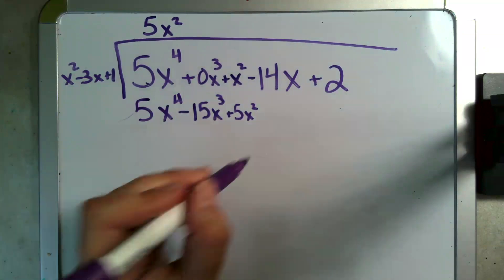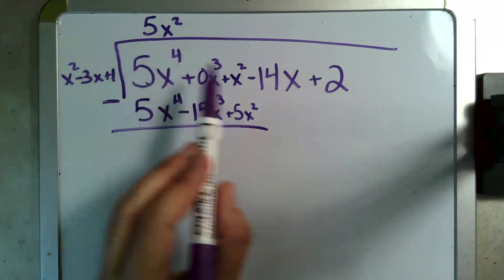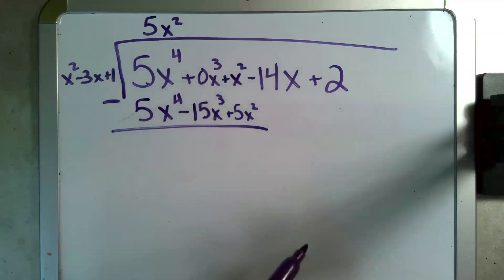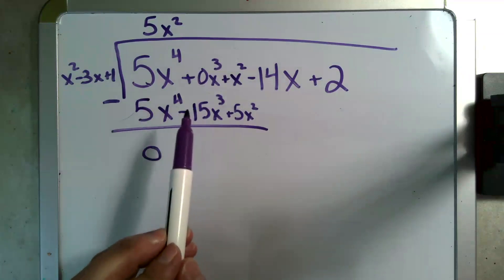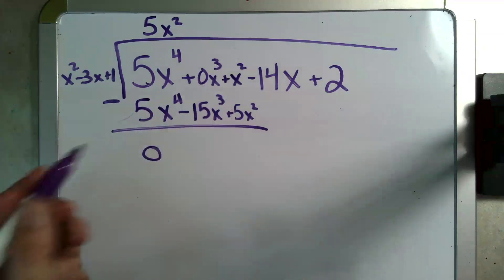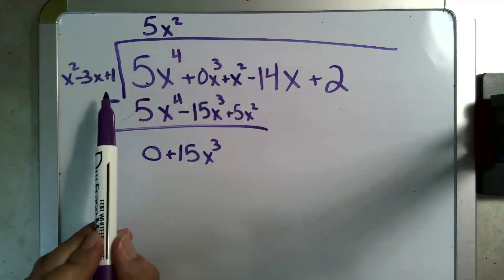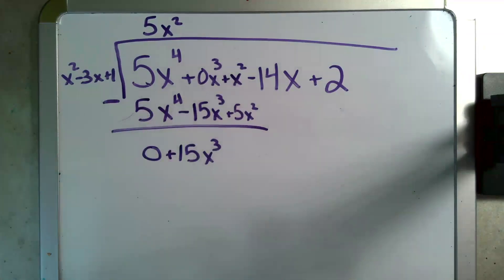So now I am going to subtract this stuff from this stuff. 5x to the fourth minus 5x to the fourth gets me zero. That was the point. Zero x to the third minus minus 15x to the third, minus minus makes it a plus so that's plus 15x cubed, and finally 1x squared minus 5x squared leave me minus 4x squared. And now I bring my next term down and I start again.